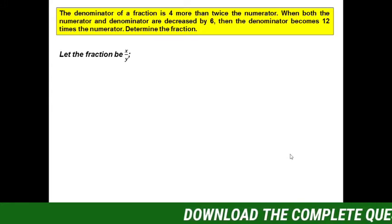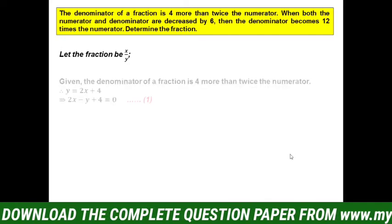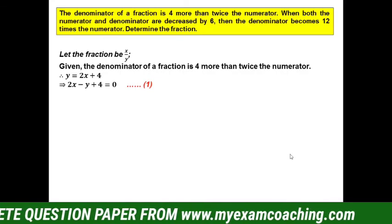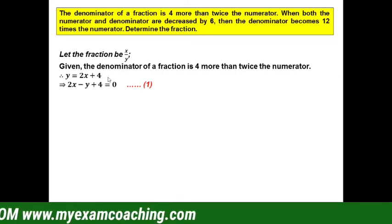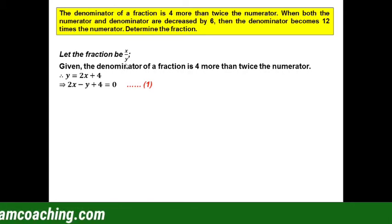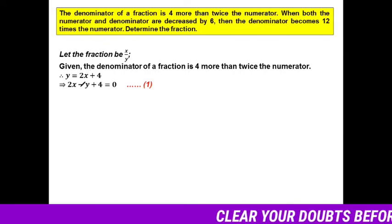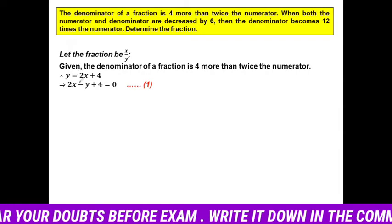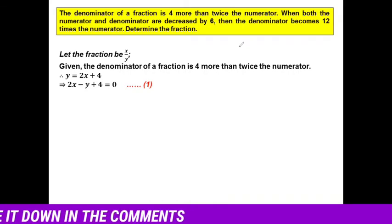Now according to the conditions given, let us write two equations. The denominator is 4 more than twice the numerator: twice the numerator is 2x, so 4 more than twice the numerator is 2x + 4. Therefore y = 2x + 4, which we rearrange to: 2x − y + 4 = 0. This is equation number 1.